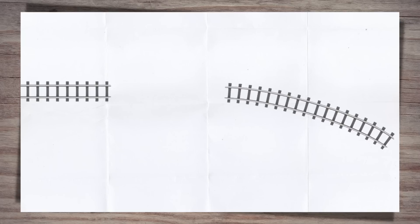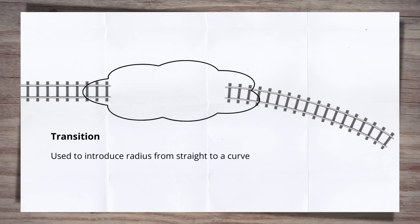This is where the transition curve comes in. A transition curve is used to introduce then decrease the radius from straight to the designed curve radius, while also building up from zero mil to the required cant level.